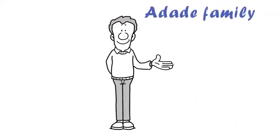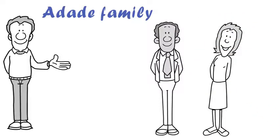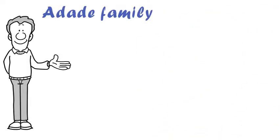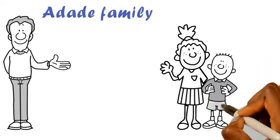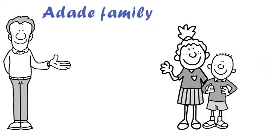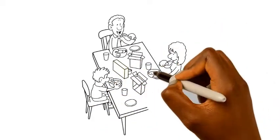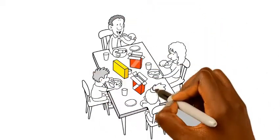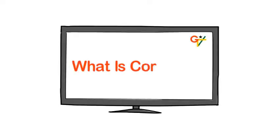Let me introduce you to the Adadei family. They are Mr. and Mrs. Adadei, Elom their 13-year-old daughter and Nyameke their 10-year-old son. The Adadei family were having dinner one evening. On television was showing the news at 6. The word corruption was mentioned to have been one of the problems in the country.